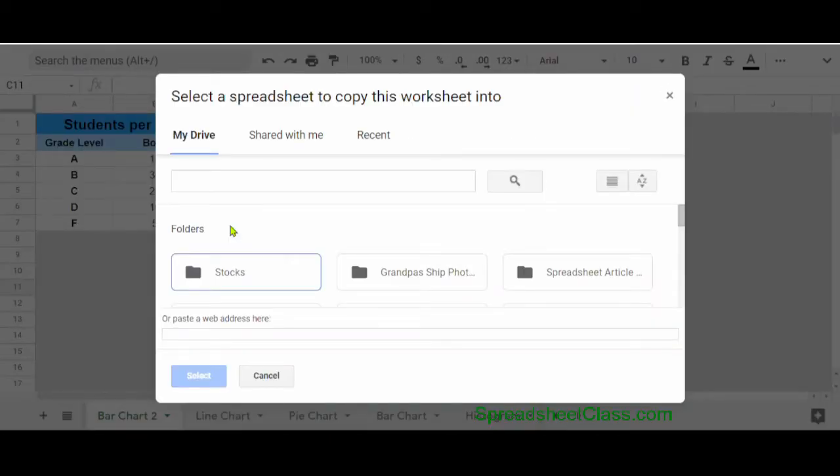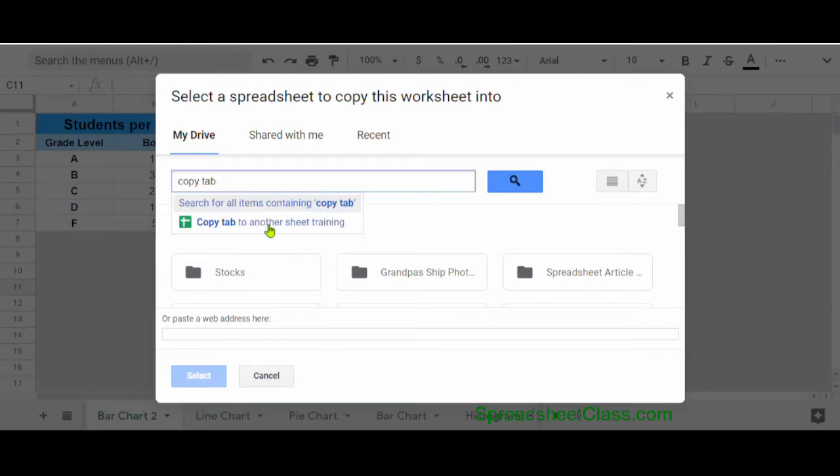Now Google Sheets will automatically pull up a window where I can search for the sheet that I want to send the tab to, and you can either use the search bar, look through the folders, or simply paste the URL of the destination sheet. In this example, I'm going to use the search bar and then select the sheet that you want to copy the tab to.